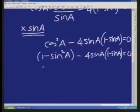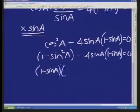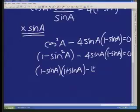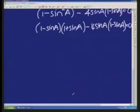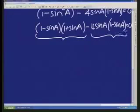That can now be factorized into 1 minus sine a, 1 plus sine a, minus the 4 sine a and the bracket 1 minus sine a equals 0. So we've got two terms, here's our first term, here's our second term.